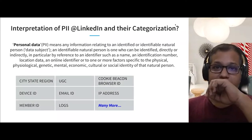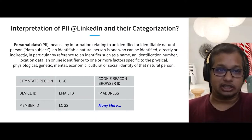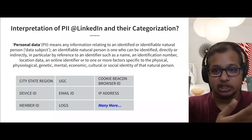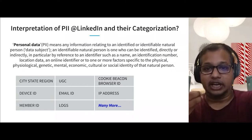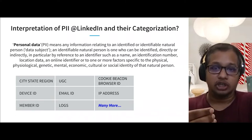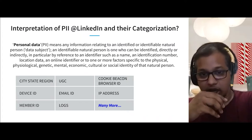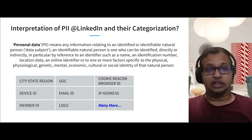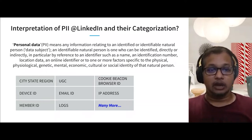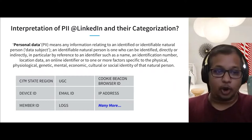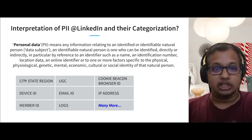The interpretation of PII provided by the GDPR Council is as such: PII means any record that can uniquely pinpoint to a user will be treated as PII. There should not be any attributes in your data that can uniquely identify a customer or a user directly. Examples include city, state, region, device ID, IP address from which a user logged in, user email ID, any logs captured by the user, or the user ID.